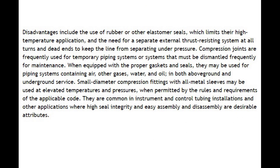Disadvantages include the use of rubber or other elastomer seals, which limits their high temperature application, and the need for a separate external thrust resisting system at all turns and dead ends to keep the line from separating under pressure. Compression joints are frequently used for temporary piping systems or systems that must be dismantled frequently for maintenance. When equipped with the proper gaskets and seals, they may be used for piping systems containing air, other gases, water, and oil in both above ground and underground service.